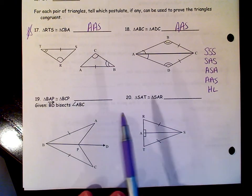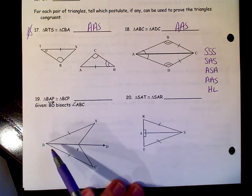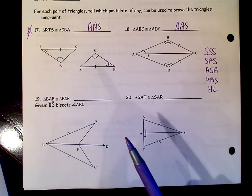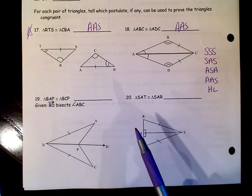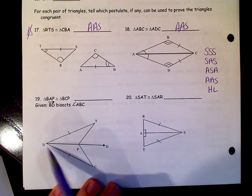On 19, we're asked to prove that triangle BAP and triangle BCP are congruent to each other. And it tells us that this ray, BD, bisects angle ABC.